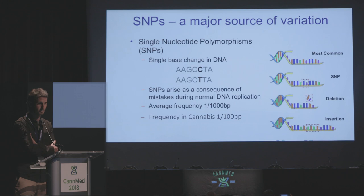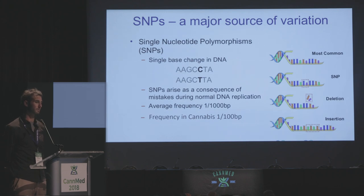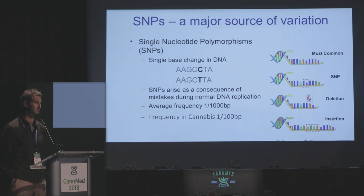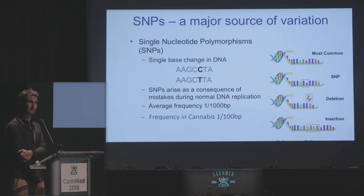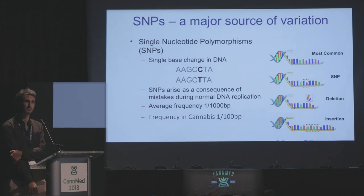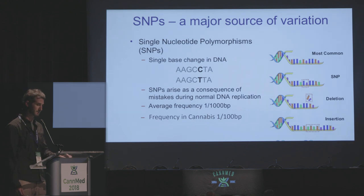I want to talk more about SNPs, which John mentioned. Essentially, a SNP is a single base-pair difference on a sequence — one of the most common sources of polymorphism. It typically arises from a mistake in replication from one cell cycle to the next, and is one means of generating diversity, as with mutagens — though nature does it on its own. We typically see an average frequency of about one SNP per thousand base pairs. But in the cannabis genome, there are actually quite a bit more — about one SNP every hundred base pairs — representing a large amount of diversity.